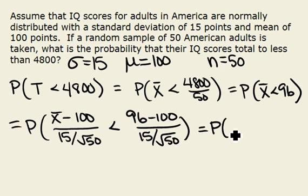So we have the probability that Z is less than this expression, which is just a number. If you calculate it, what you'll get is negative 1.89.